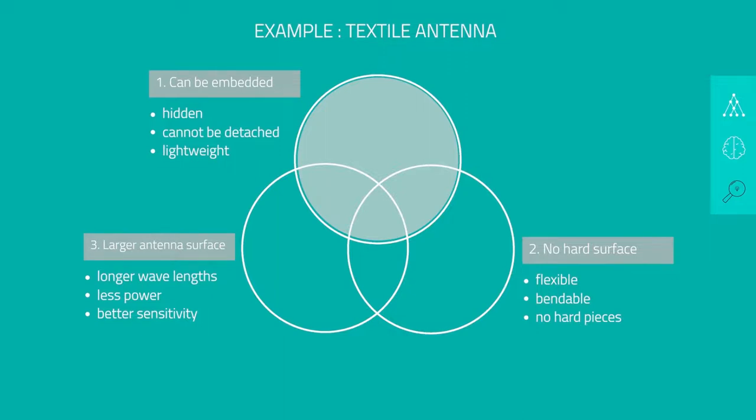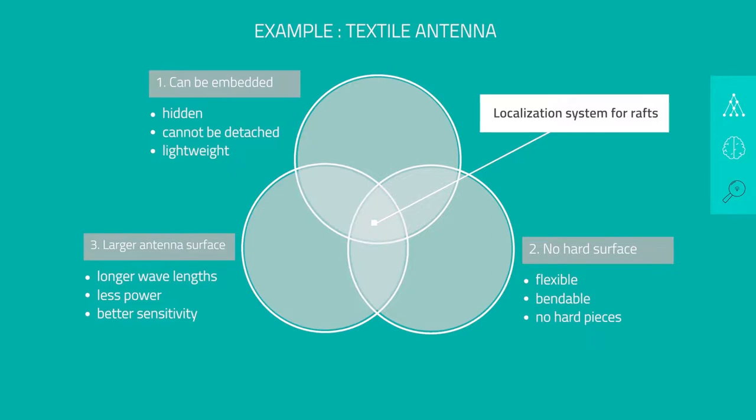For example, if we look at the center of the Venn diagram, there is a localization system for safety rafts. It's clear that it's valuable that an antenna cannot be detached from the safety raft, so technical problems in an emergency situation can be avoided. It's also valuable that the antenna is flexible and can be bent, because the rafts, when they're in a storm at sea, go through very high stress situations. And also, it's valuable that the antenna uses less power and has better sensitivity, so it's possible to send emergency signals for a longer period of time.